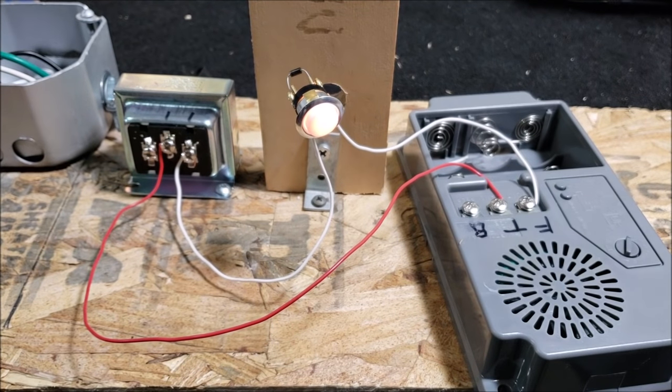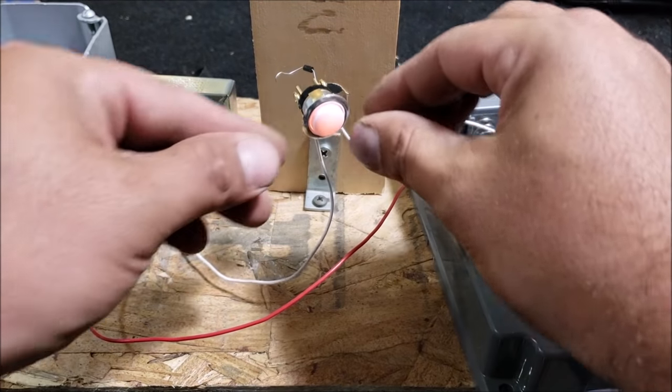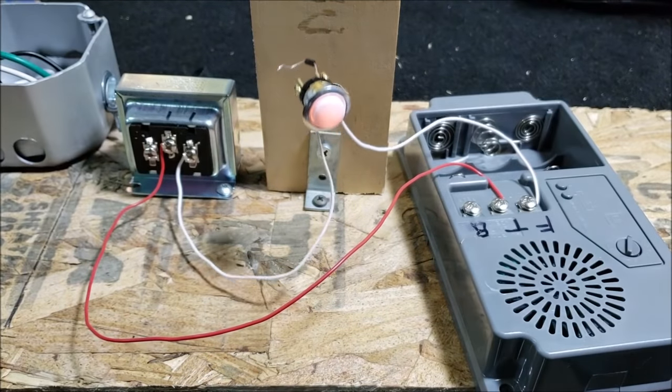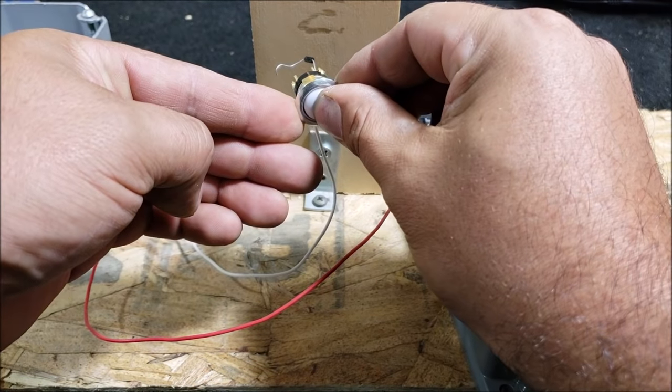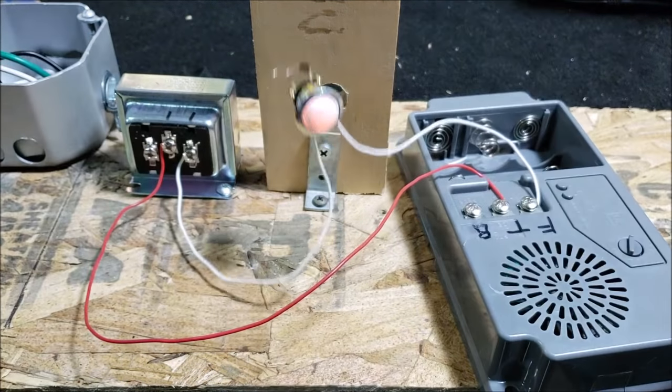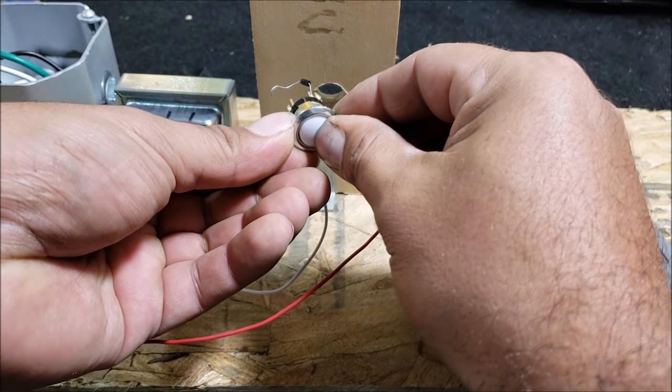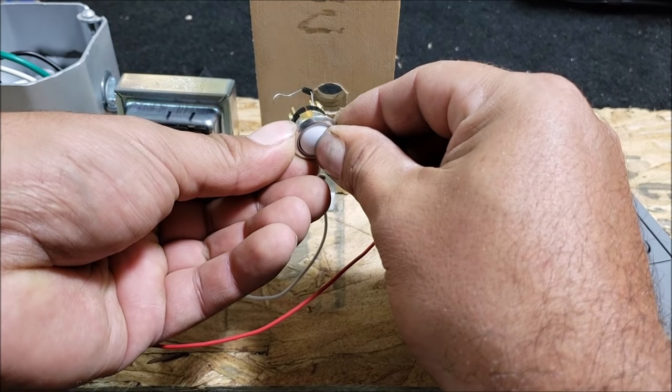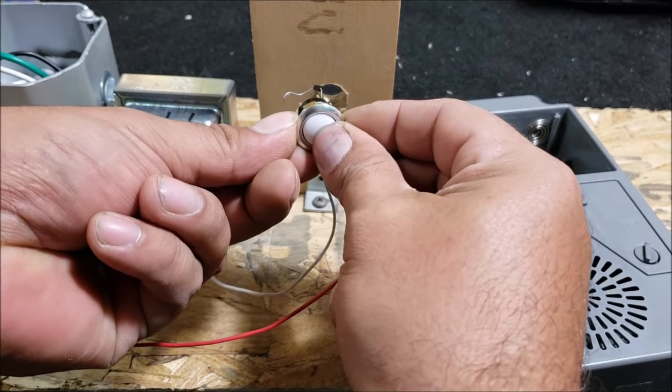Now let's take the diode out and see what it does. So let's see what happens with the diode disconnected. Nothing, absolutely nothing. Let's hold it down. There you go. So as soon as we let go it stops. So you see when we take the diode out we have to hold the button down. If we let go, it stops.